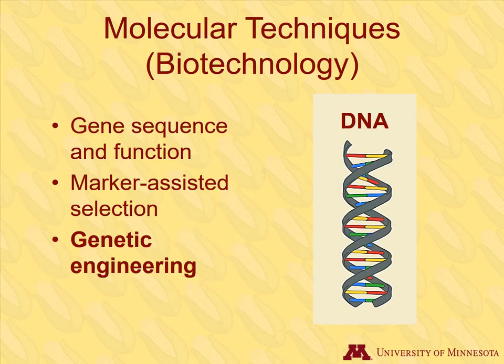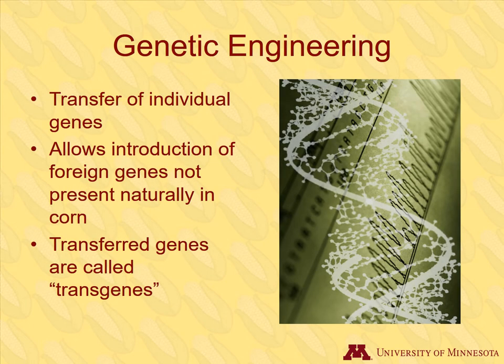We will discuss the last molecular technique, genetic engineering, in greater detail. This process has been used to add some unique traits to corn. Genetic engineering is important to understand as this topic often comes up in the popular media. In traditional breeding, breeders transfer many genes by combining different parent inbreds to get the desired result in a hybrid. In genetic engineering, breeders can transfer individual genes directly into the genome of a corn plant, and they're not limited to just genes present in corn. They can take foreign genes from bacteria, other plants, or even animals. When genes are transferred via genetic engineering, they are called transgenes.